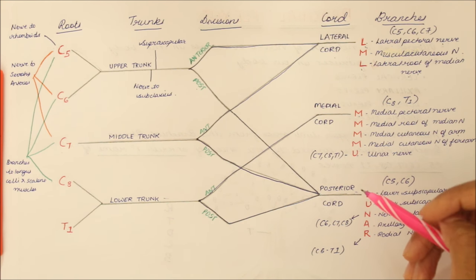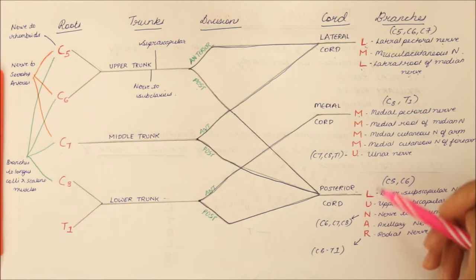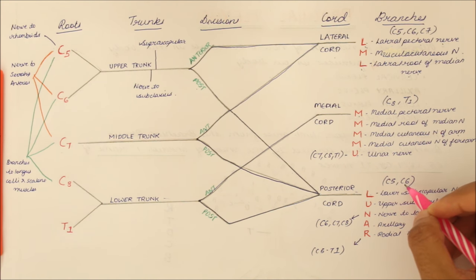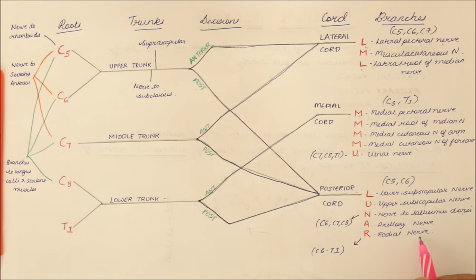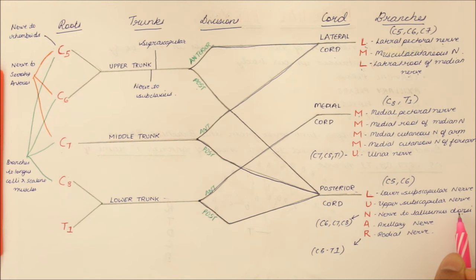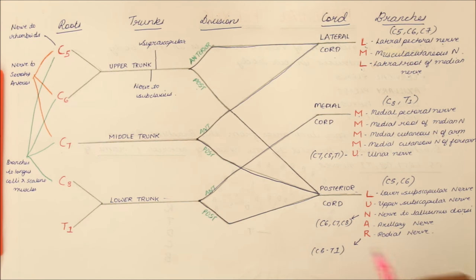Moving on to the nerves of the posterior chord, they have the root value C5, C6, except for two nerves. The nerve to latissimus dorsi has a root value of C6, C7, C8, while the radial nerve has a root value of C5, C6, C7, C8, T1.